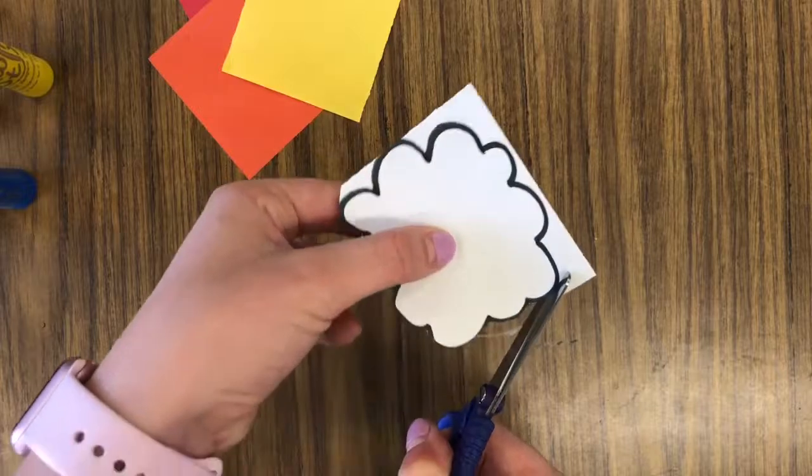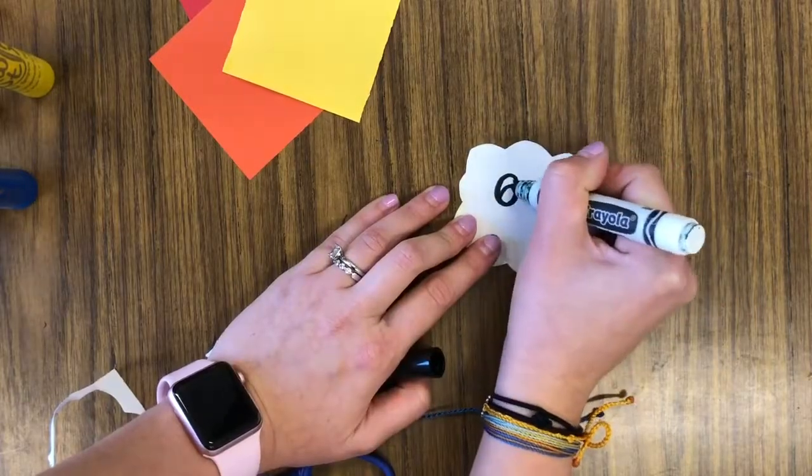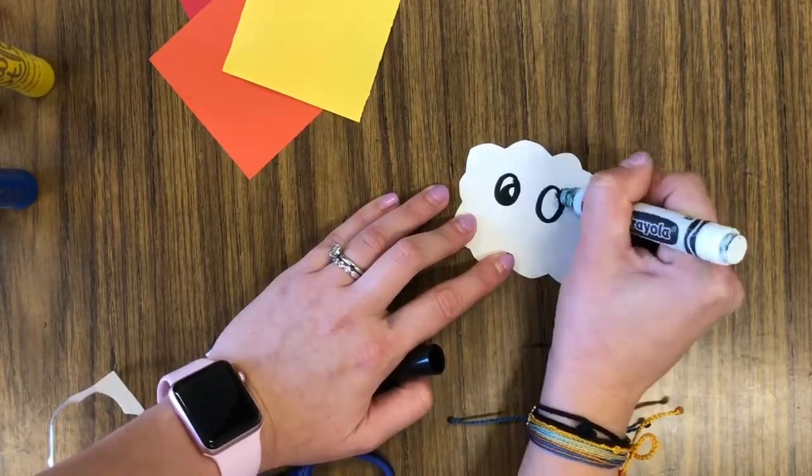You will cut out a cloud shape and will draw a face on your cloud. He will go on one end of your rainbow.